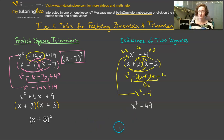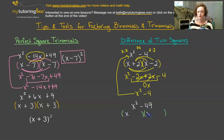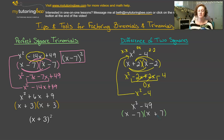One more example for the difference of two squares. Here we have x squared minus 49. x squared is a perfect square, 49 is a perfect square, and they are being subtracted — so we've got all the criteria for a difference of two squares. We know we are going to split x squared into x and x, split 49 into its square root which is 7 and 7, and in order to make this a negative 49, we have to have a positive 7 and a negative 7. The order of the binomials doesn't matter, just as long as you have the correct sign in front of each second term.